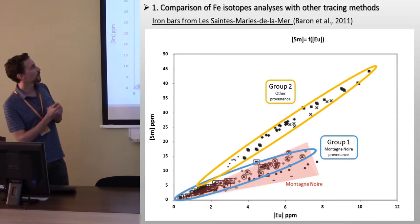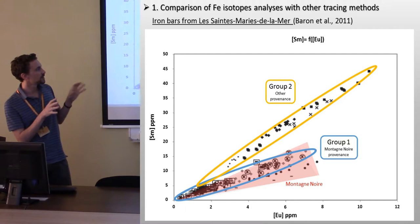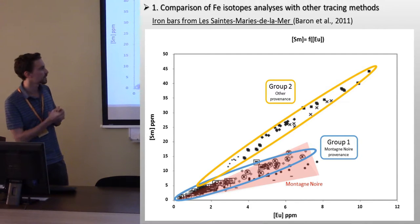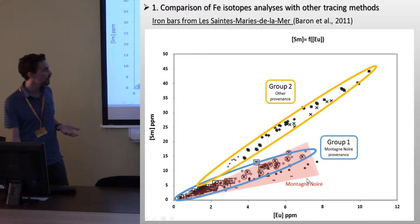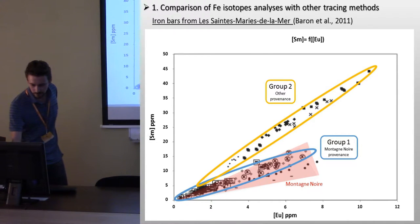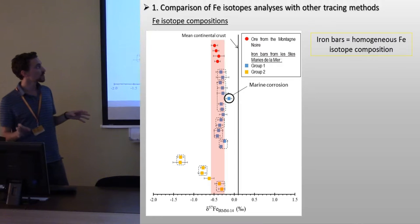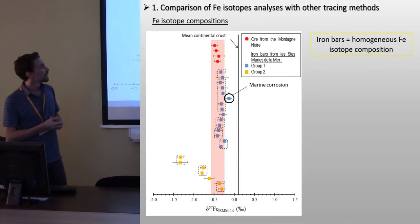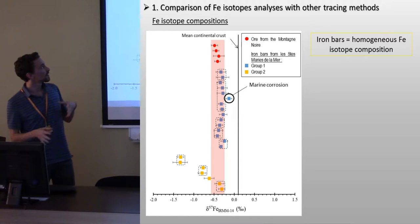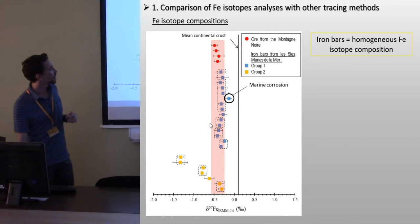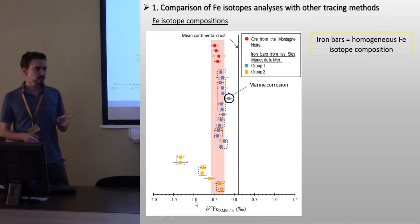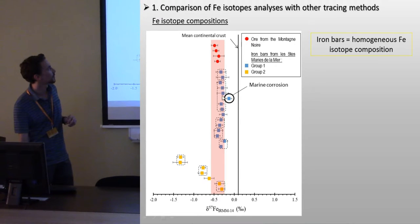The results of Baron et al. show the different groups of bars from Saint-Marie-la-Mer. One group had a composition similar to that of the Montagne-Noire, while another group had a clearly distinct composition suggesting another provenance. We analyzed different bars from both of these groups and tried to compare their composition with that of materials from the Montagne-Noire. Except for two bars, we analyzed at least two samples for each bar, and sometimes more.